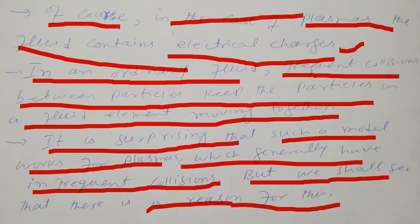Modern computers can do this — we follow each particle's trajectory — although they have only enough memory to store the position and velocity components for about 10^4 particles. Since plasma density goes up to 10^12 per cubic centimeter, our systems are not sufficient for that. Nonetheless, computer simulations have recently begun to play an important role in filling the gap between theory and experiment in those instances where even kinetic theory cannot explain what is observed.